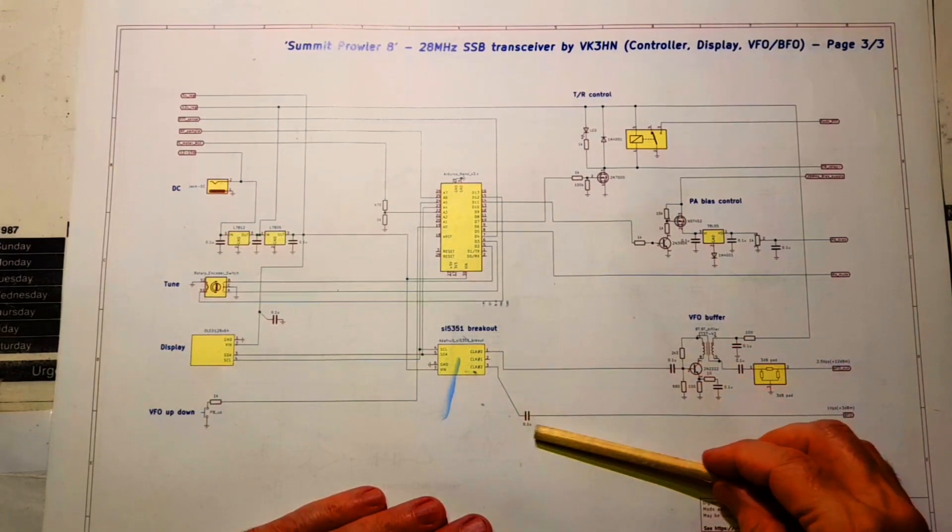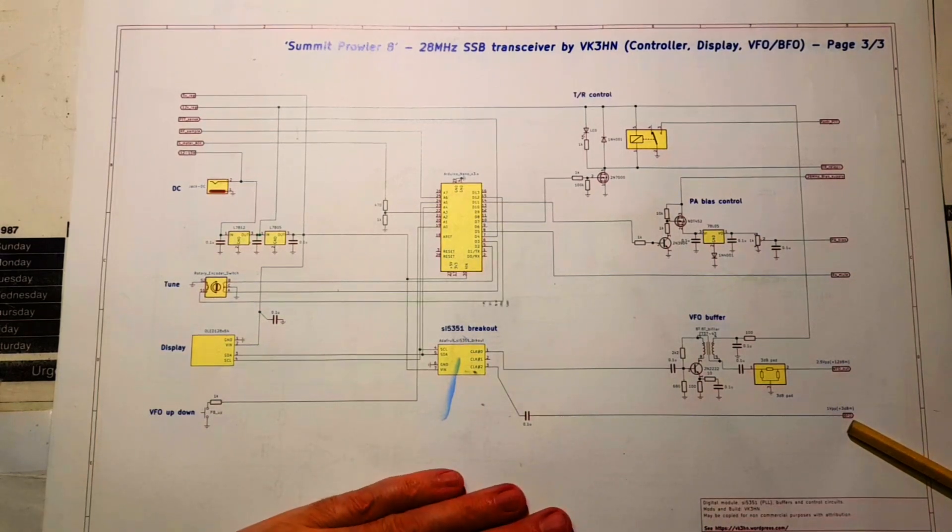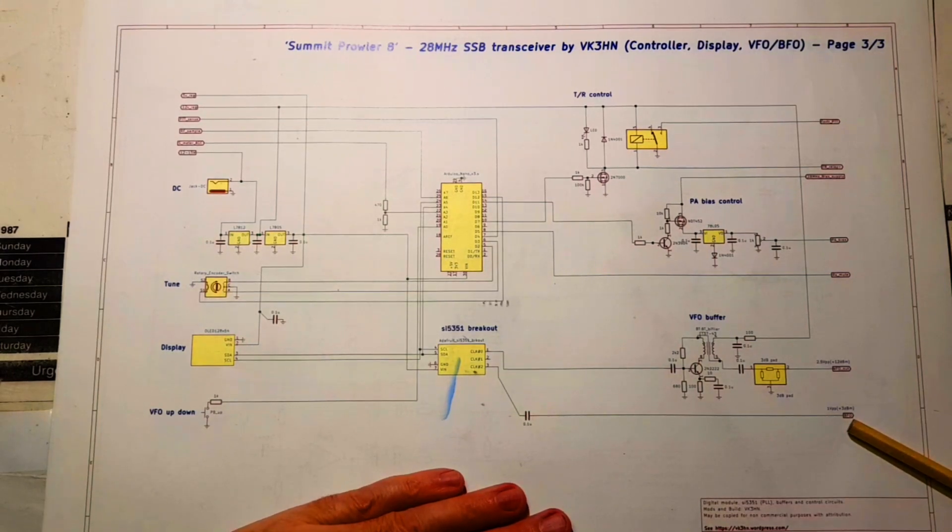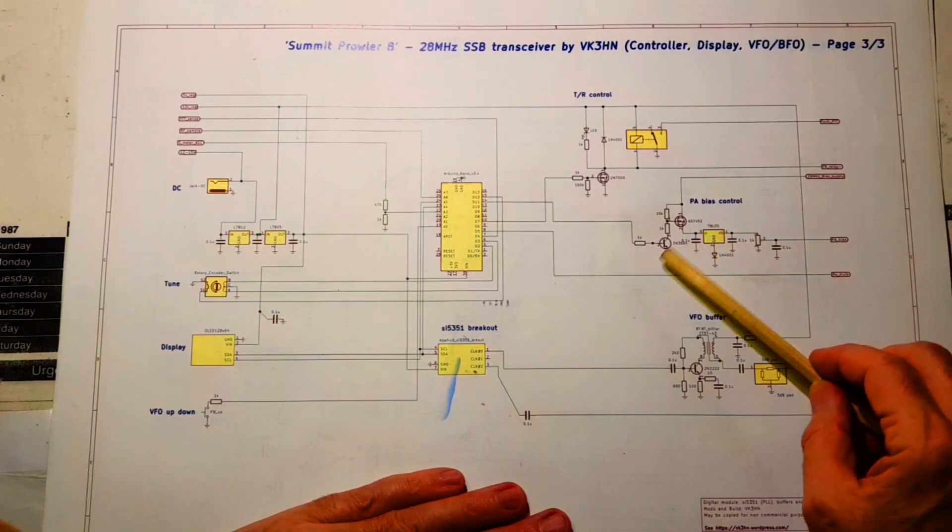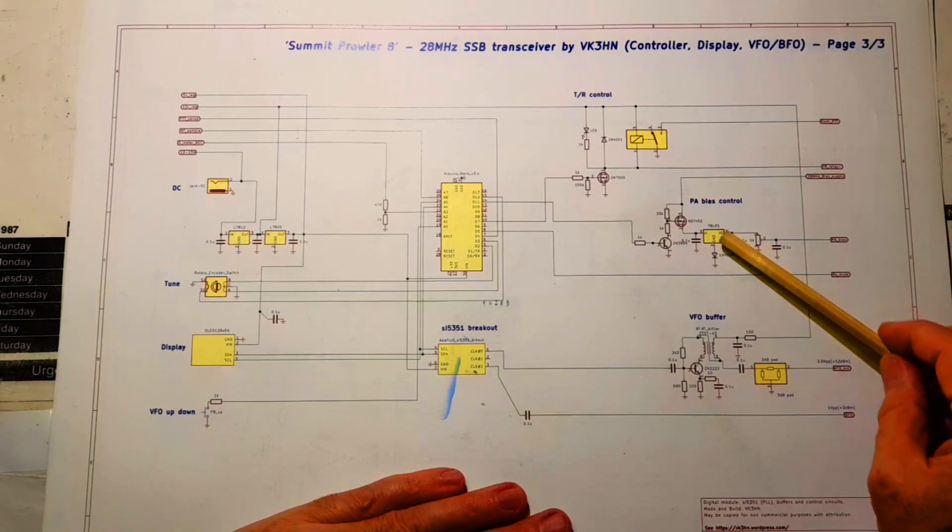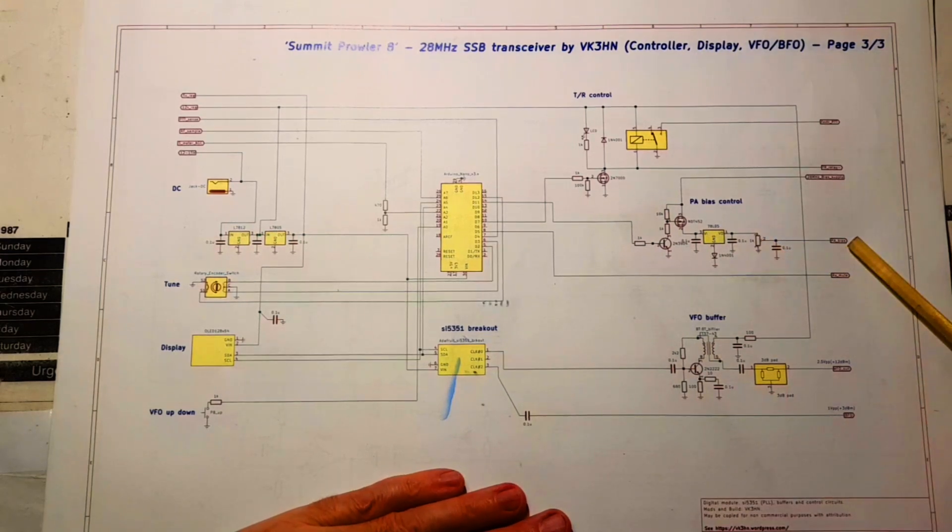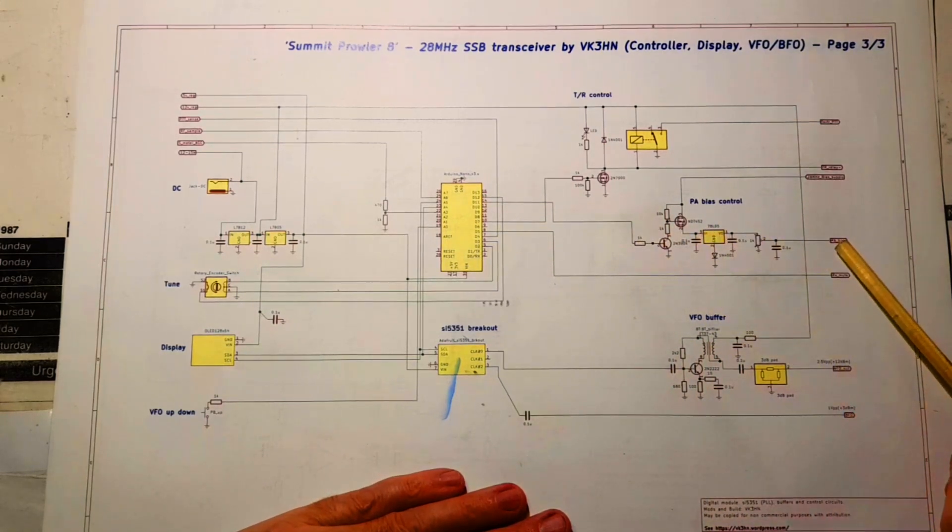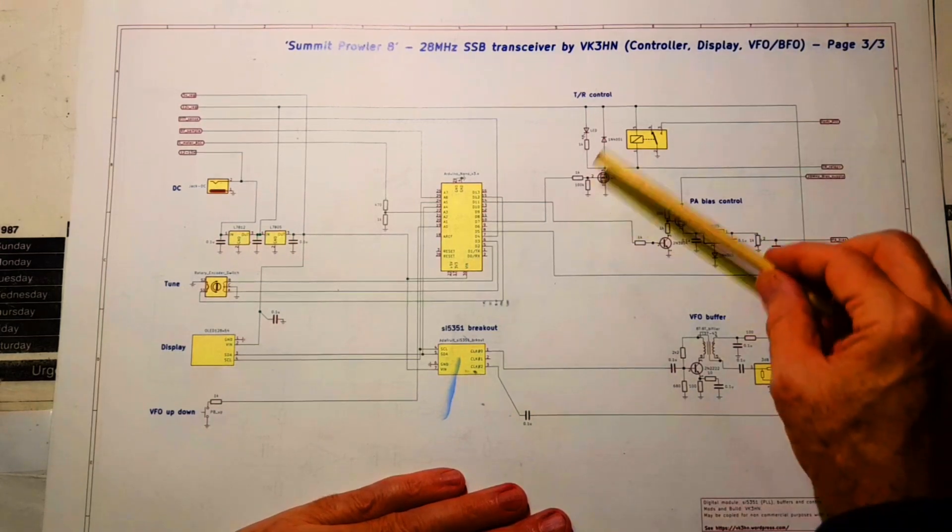And there's no need for any buffering on the BFO because that just goes straight in at a few hundred millivolts into the SA612 product detector and also the balanced modulator, both which operate happily with relatively low levels of BFO signal. This block here is the PA bias control. So as I said, that's a P-channel FET which switches 12 volts on to a 5-volt regulator, and that's trimmed for PA bias. And that just means that the software running on the Arduino can apply PA bias at exactly the right time and then pull it back at the right time as well. And this is a relay switch.